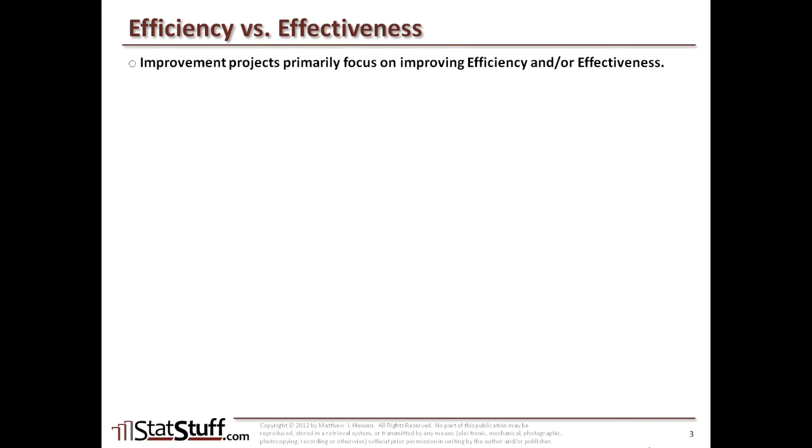Lean primarily focuses on improving efficiency and Six Sigma primarily focuses on improving effectiveness. Many improvement projects will focus on one or the other, or possibly both. But what do we mean by efficiency and effectiveness, and what's the difference between each of them? Let's get into a description of what I mean by efficiency and effectiveness.